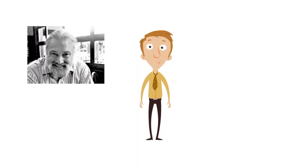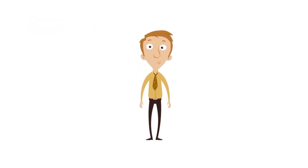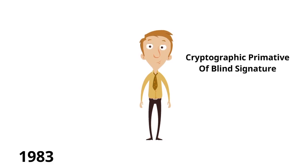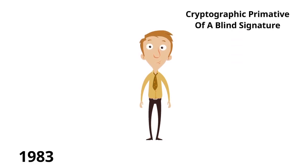David Chaum, an American computer scientist and cryptographer born in 1955, first introduced the idea of digital cash in 1983 within a research paper which was the first time the concept of a cryptographic primitive of blind signature was introduced, which would allow anyone to obtain a digital currency from a bank and spend it while being completely untraceable by that bank or any other third party other than yourself or the person you were wanting to exchange the money with.